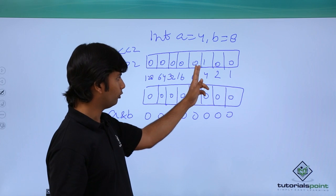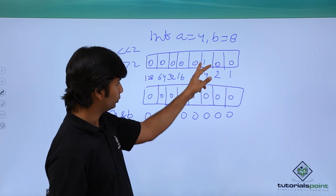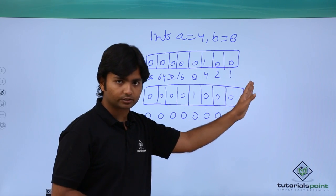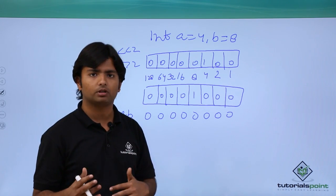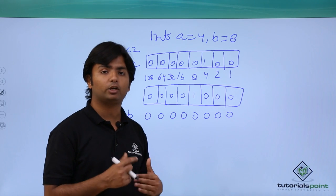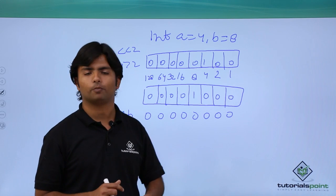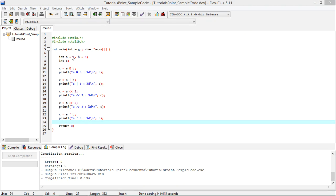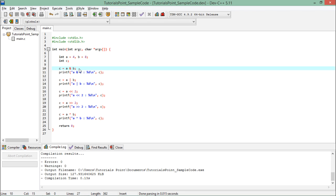For right shift by two bits, the bit for four shifts two places right — one, two — landing on position 1. So a right shift 2 gives 1. Similarly, with different values in a and b the same logic applies. Now let's see practically how to implement these bitwise operators. I have taken the same values: a is 4 and b is 8.